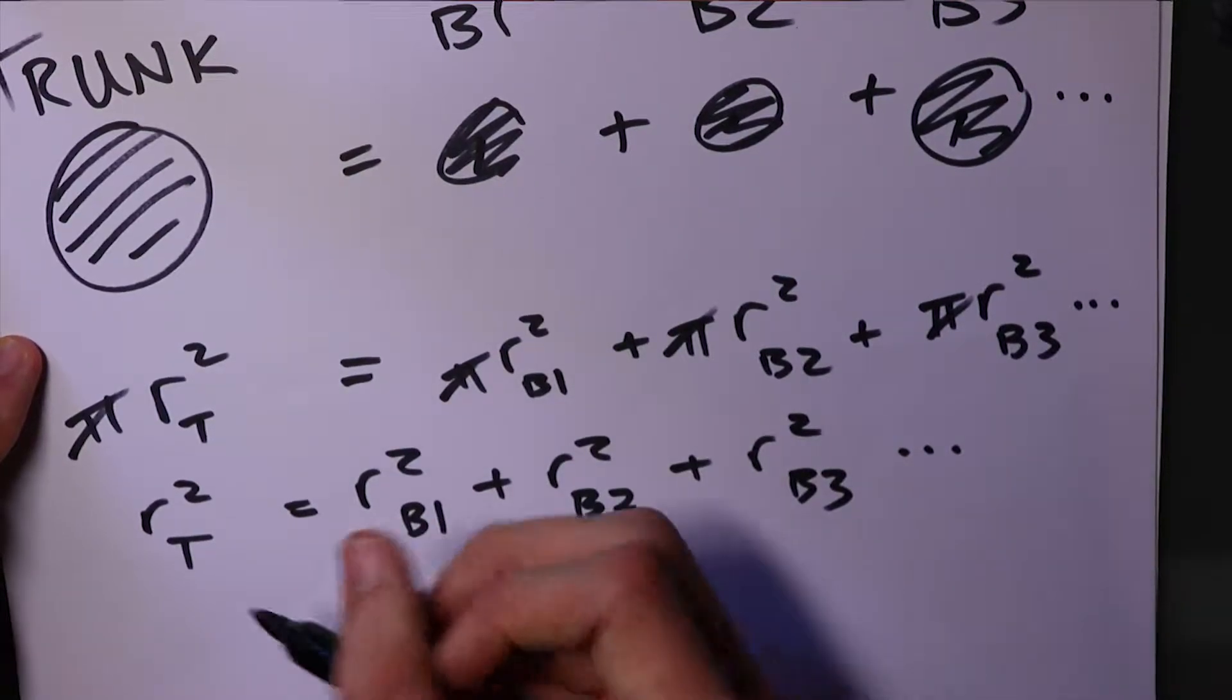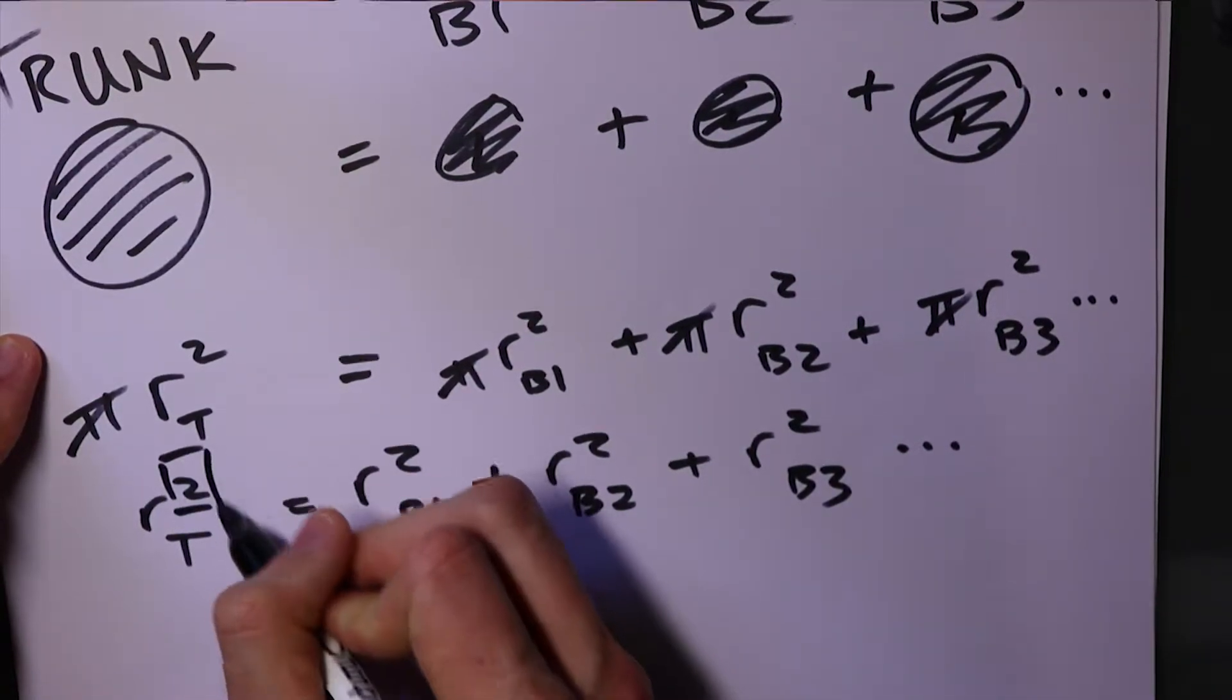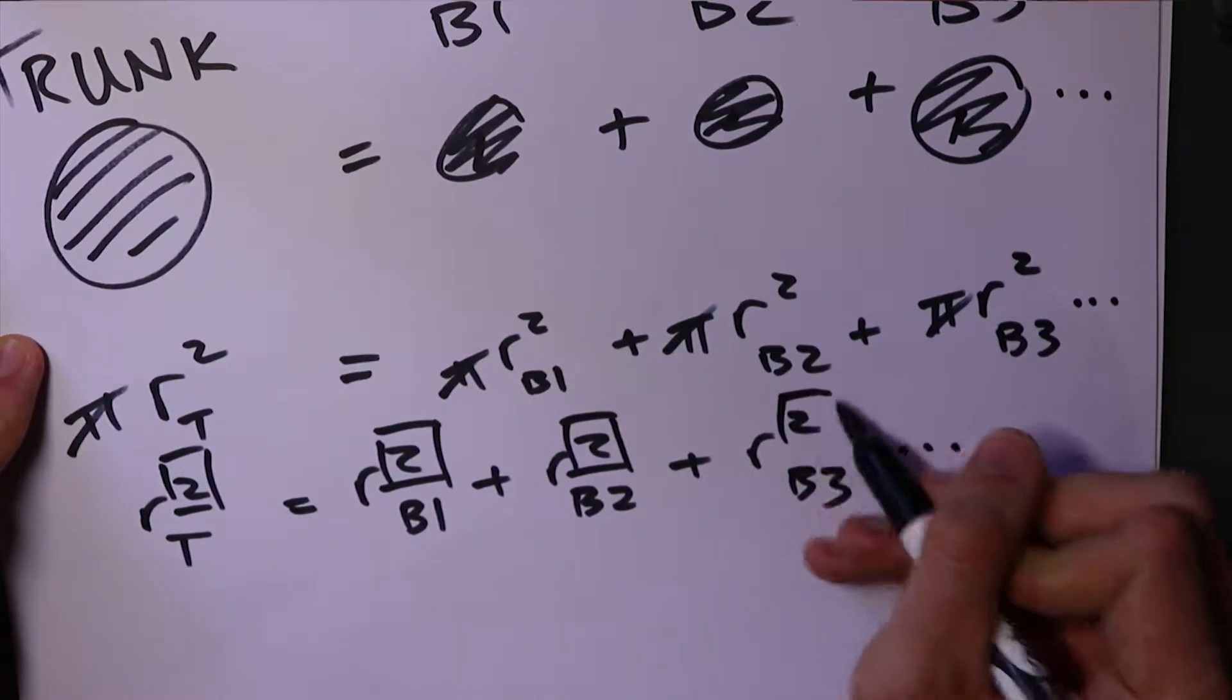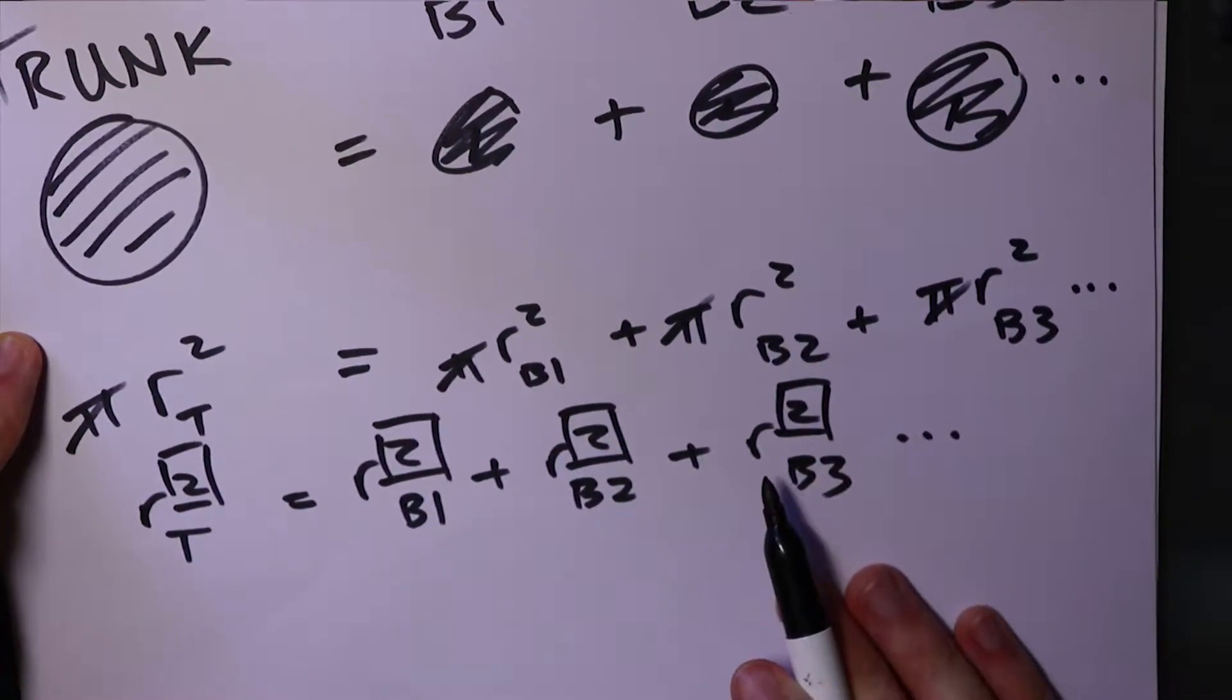So now you can start to see this relationship. So in this case, it's a two. That is the Leonardo exponent. Now modern data has actually found that da Vinci was really close with the Leonardo exponent ranging from about 1.8 to 2.3 for most species. So outside, I have an Ashleaf or Boxelder maple. And I'm going to test it for myself and show you how to do the same thing.